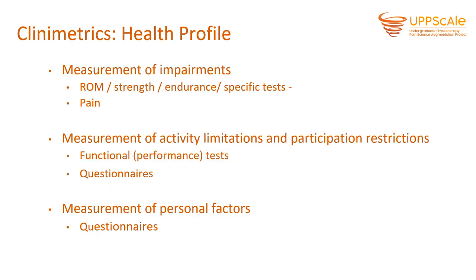To fill these boxes we need to measure her impairments, which means doing an objective examination including her range of motion, strength, endurance, and neurological testing including sensory examination and reflexes. You also want to measure pain variables such as pain intensity, pain duration and interference of pain with physical activities. You also want to measure activity limitations and participation restrictions, which you can partially do by having people perform functional tests, or you can give people questionnaires. Personal factors are best measured with questionnaires.